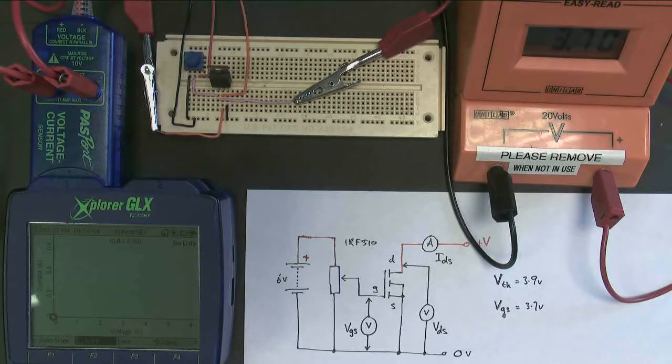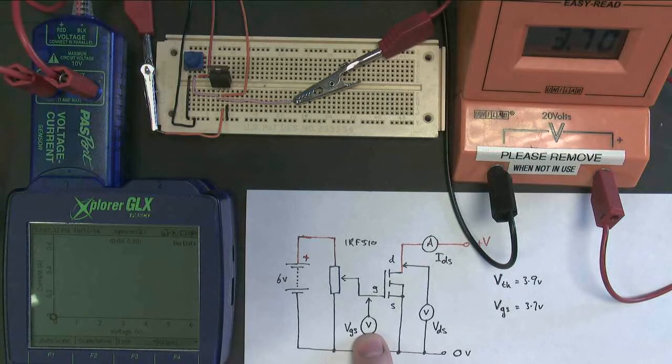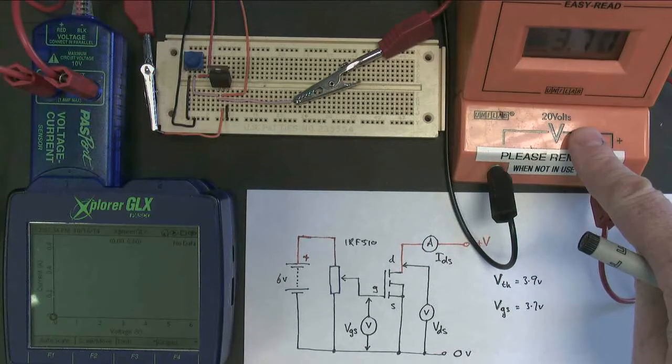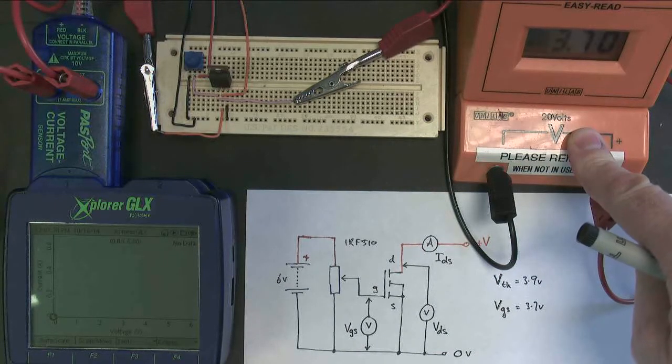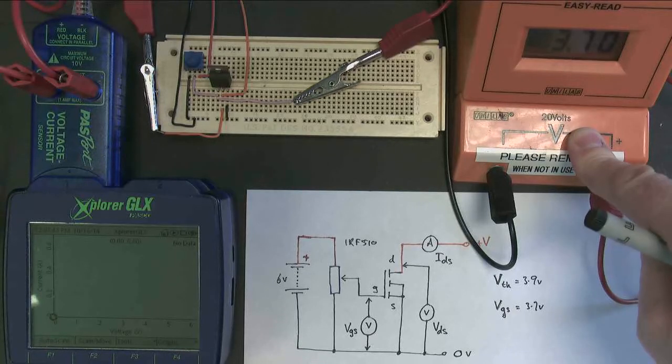In this second experiment with MOSFETs, I'm going to change things very slightly. The first change to notice is that I'm measuring my gate source voltage with this orange voltmeter, and I'm almost keeping it constant. I'm going to set it to particular values, but otherwise keep it constant.